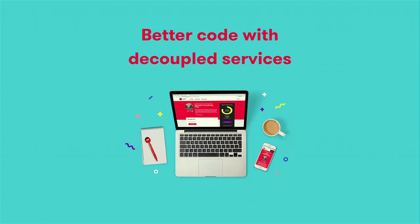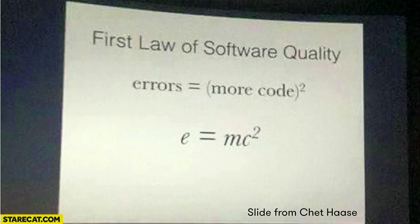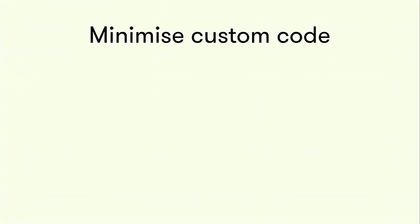Now I come to my third part, which I think is very important when developing a product: you want to write better code and use something like decoupled services. Again, I'm not going to talk about headless, but I think decoupled services are part of our microservice infrastructure ecosystem and there are many ways to do these kinds of things in the land of Drupal. But first, better code. The more code you add to your code base, the more errors you're going to see — times two. So we want to minimize the custom code and make sure we only add the right amount of code.